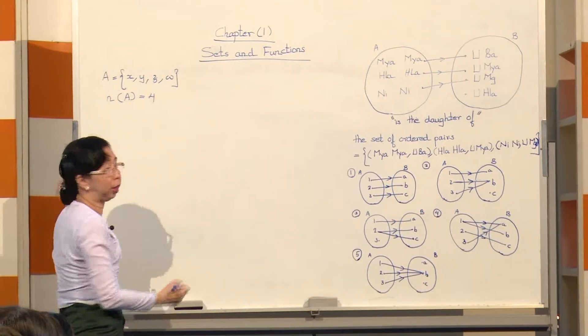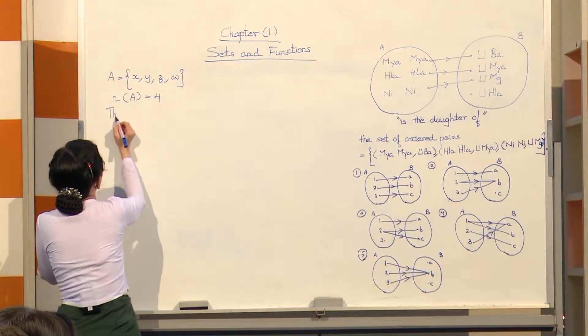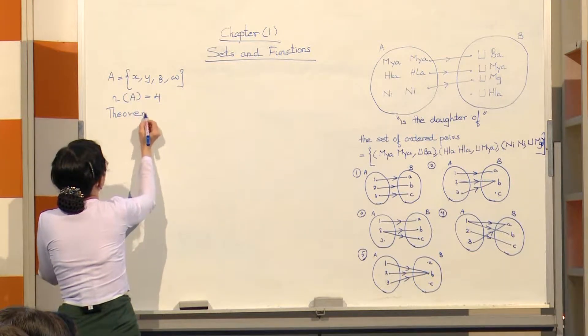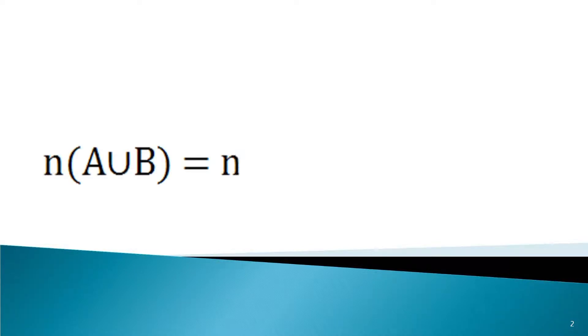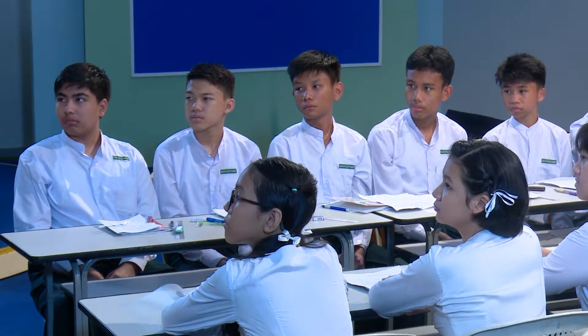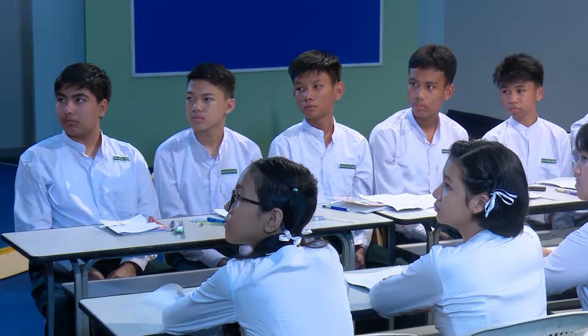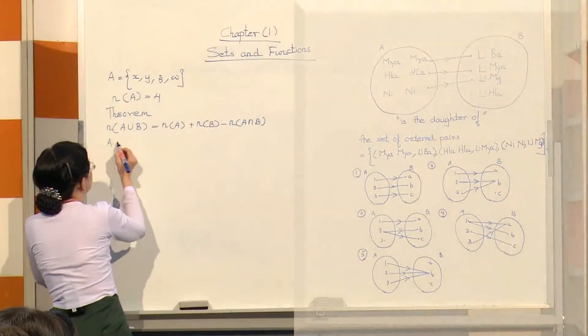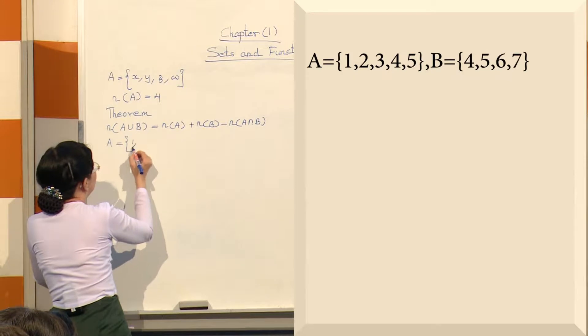The number of A union B is equal to number of A plus number of B minus number of A intersect B. Set A is equal to set B.